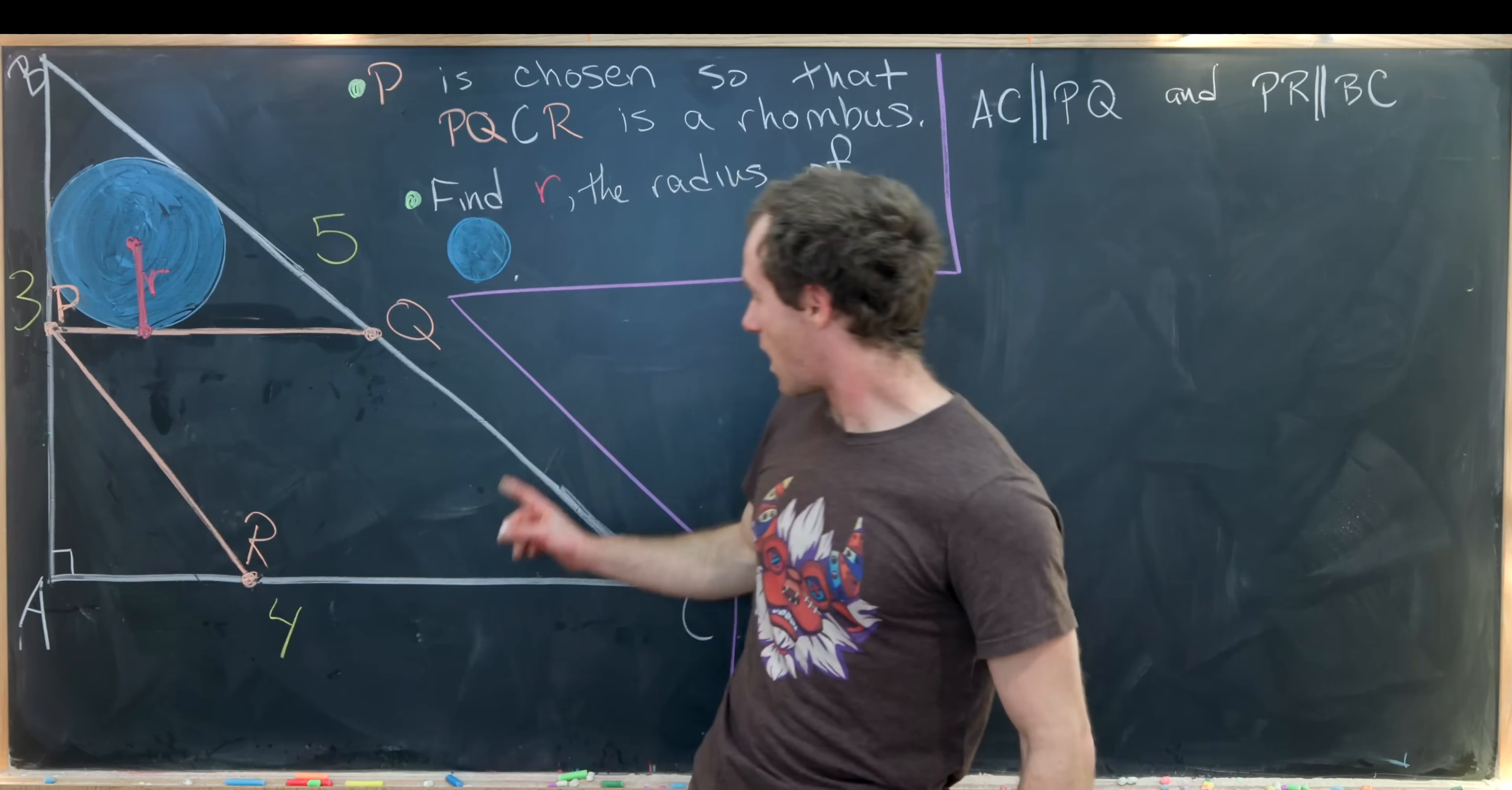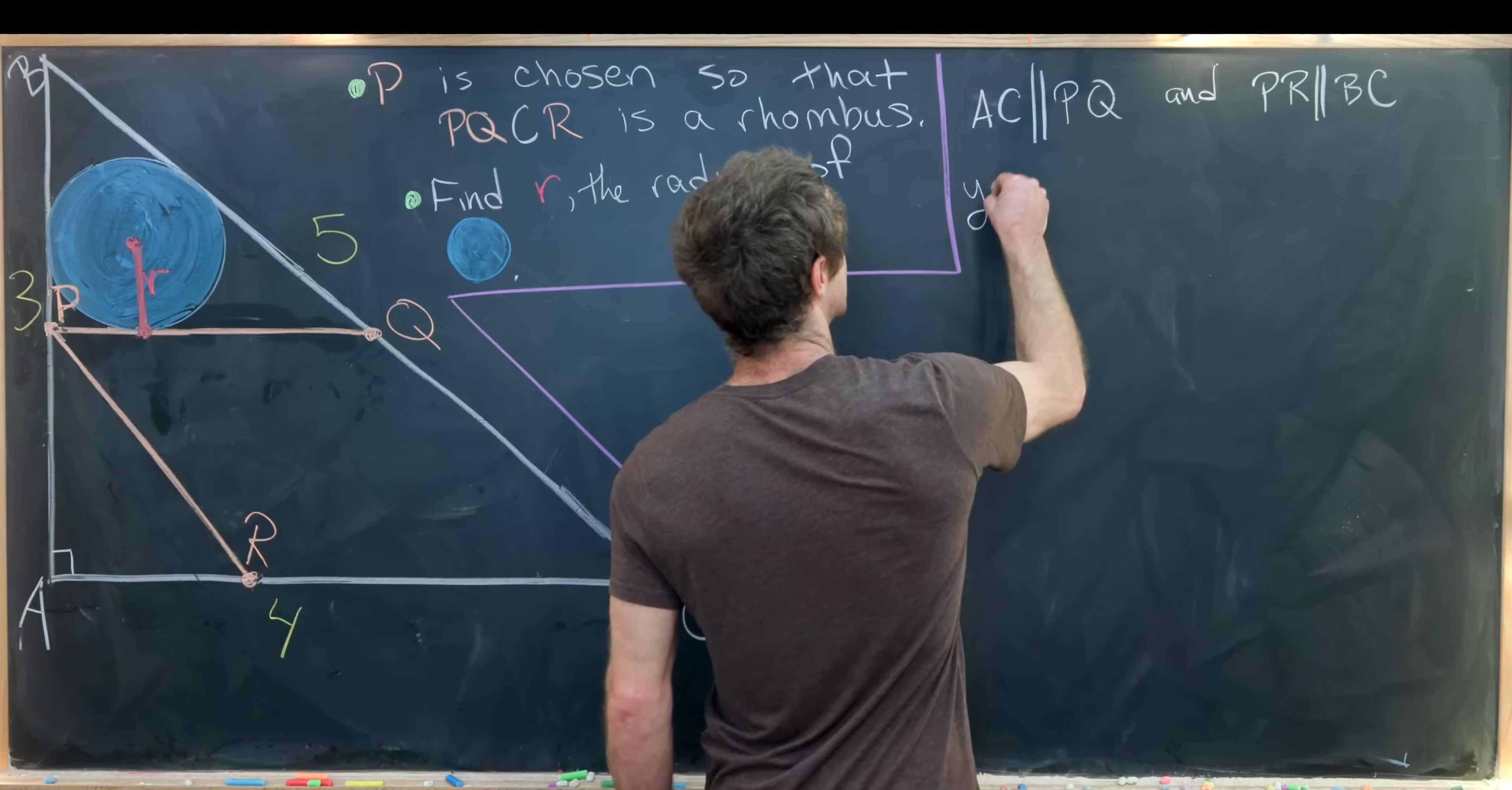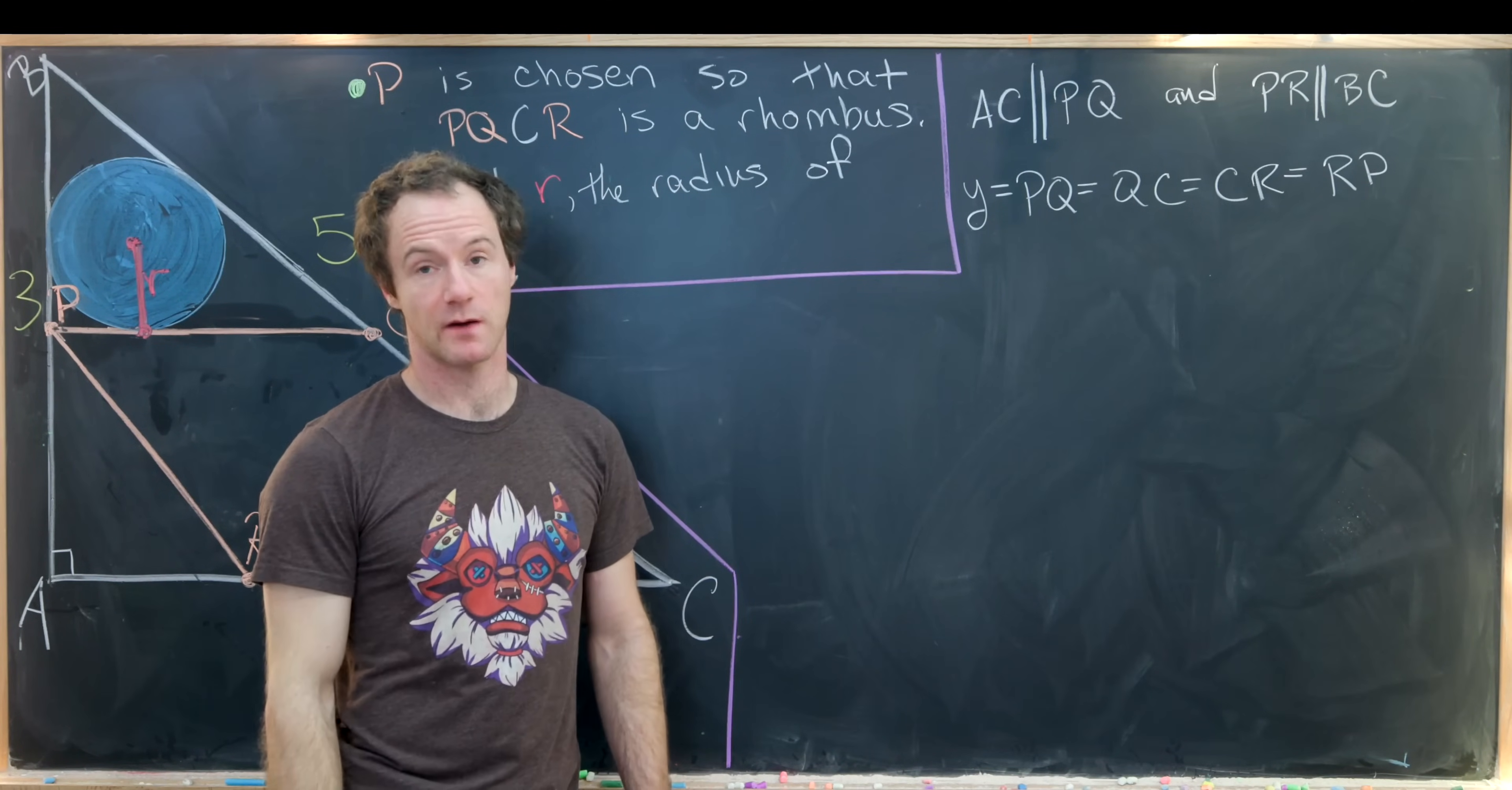Furthermore, all sides of our rhombus are equal. That's the definition of a rhombus, a special type of parallelogram. So let's introduce some notation for the length of the side of this rhombus. We'll use Y. So we have Y equals PQ, which equals QC, which equals CR, which is finally equal to RP, because that represents all four sides of the rhombus.